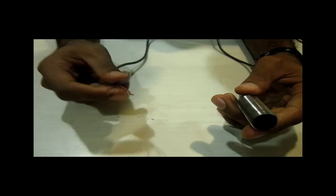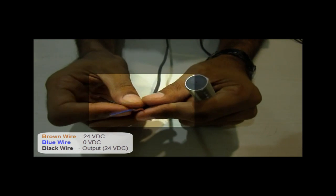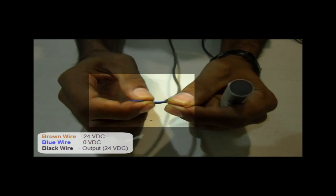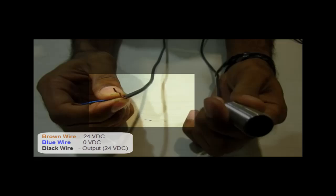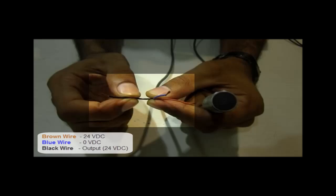Here we have three wires and we are going to give some potential to these wires. To the brown wire we will give 24 volts because this sensor is 24 volt operated, to the blue one we will give 0 volts, and we will get output from this black wire.